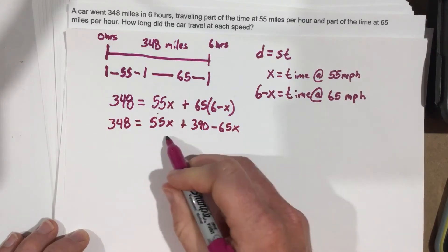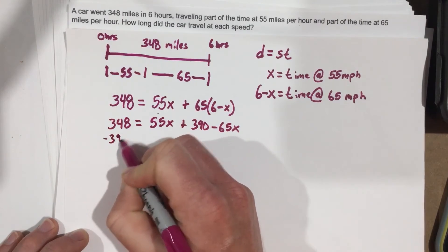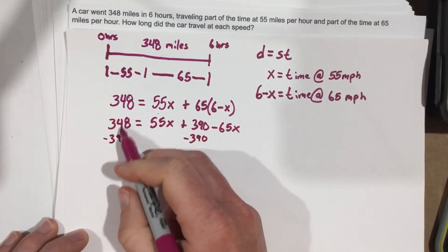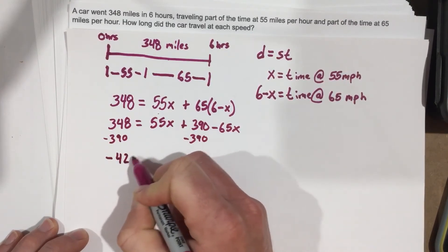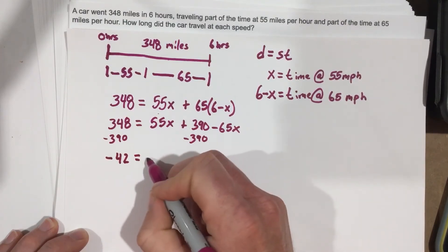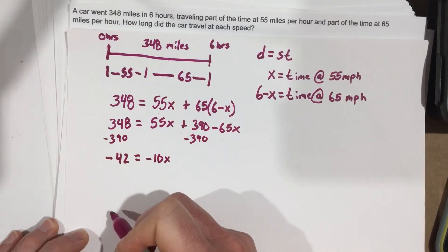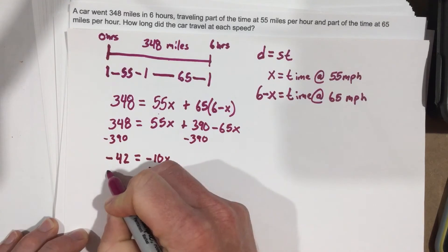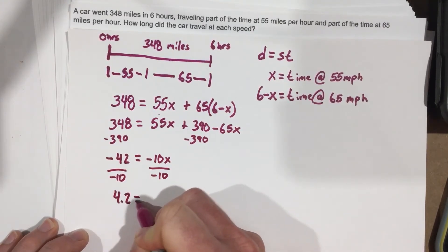Combine like terms, and we can subtract this across. So we're going to do minus 390 on each side. And let's see, that'll give you negative 42 equals negative 10X. Divide by negative 10 on each side. And so we get negative 42 over negative 10, which gives you 4.2 equals X.